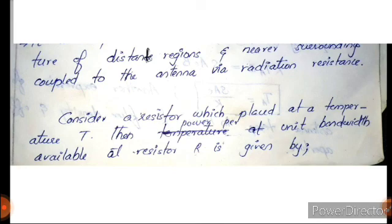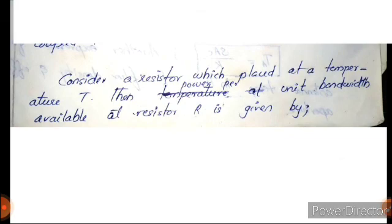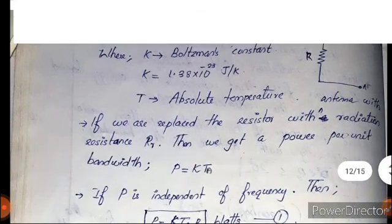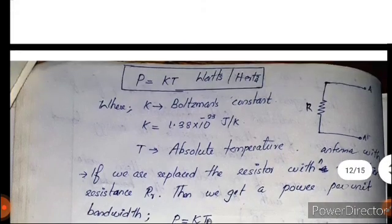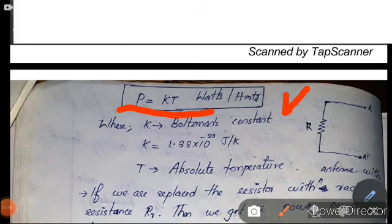What do we call the antenna temperature? It is an inherent property of the antenna and depends on the surroundings. We consider a resistance placed at temperature T. The power per unit bandwidth available at a resistor R is given by P equal to K into T, where K is Boltzmann's constant with value 1.38 × 10⁻²³ joule per kelvin, and T is the absolute temperature.